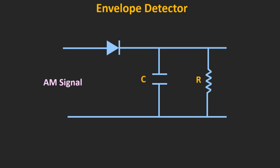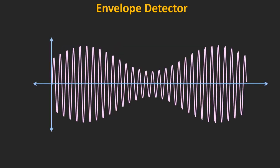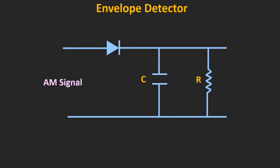This is the typical circuit of the envelope detector, and the AM signal is applied as input. We are considering the case of tone modulation, meaning the message signal is a sinusoidal signal of a single frequency — fm — while the frequency of the carrier signal is fc. To understand its working, let's assume that the diode is an ideal diode.